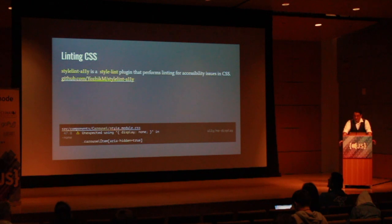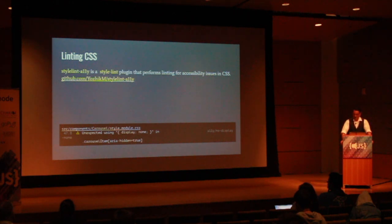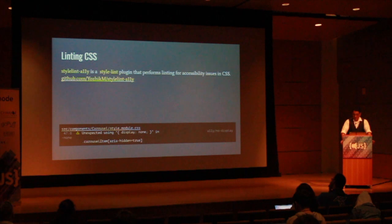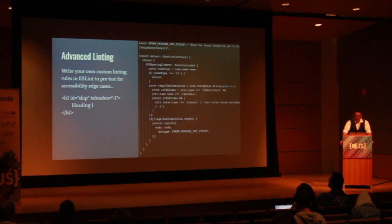Linting isn't just for JavaScript anymore — you can lint your CSS too. For accessibility issues caused by CSS rules, you can use the Stylelint accessibility plugin. It only contains about a dozen rules right now. It checks to make sure font sizes are appropriate, that focus outlines haven't been disabled, and other features. Your mileage may vary with this. Now, this doesn't use Axe Core — it's a collection of custom written linting rules, which leads us to advanced linting.